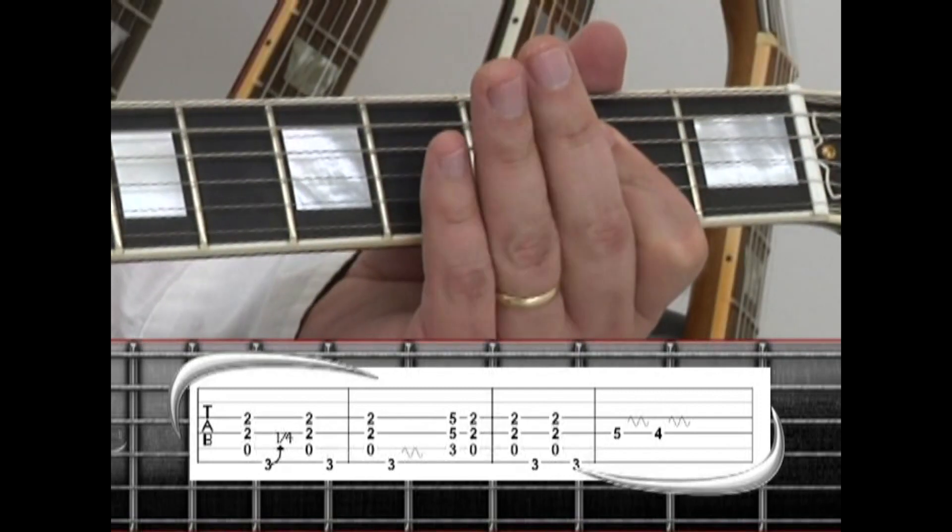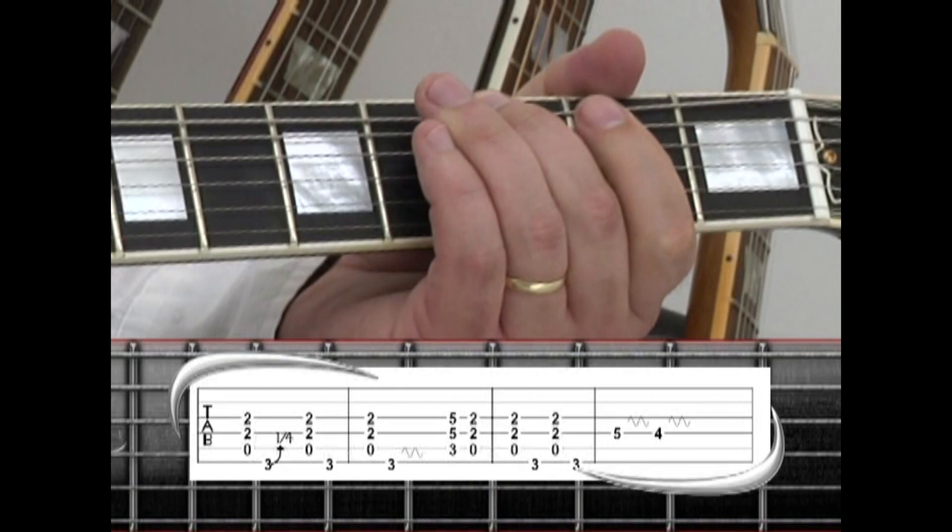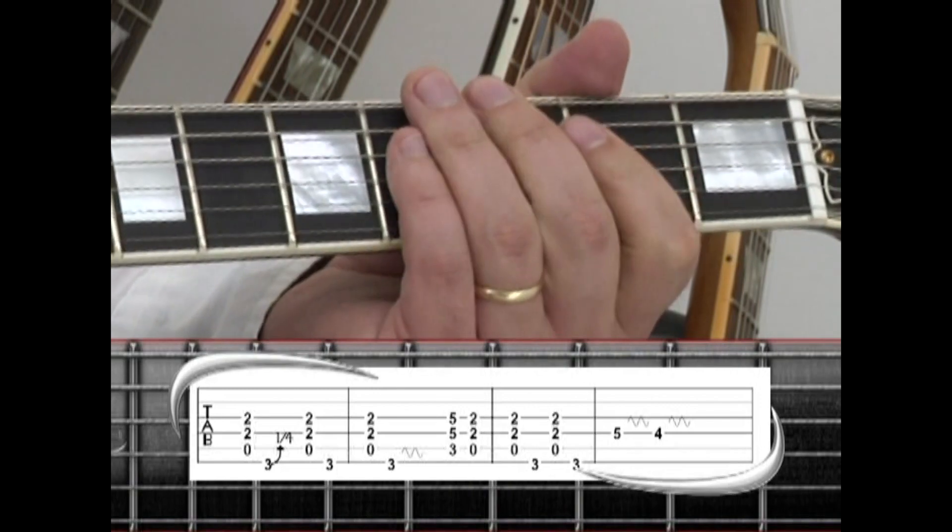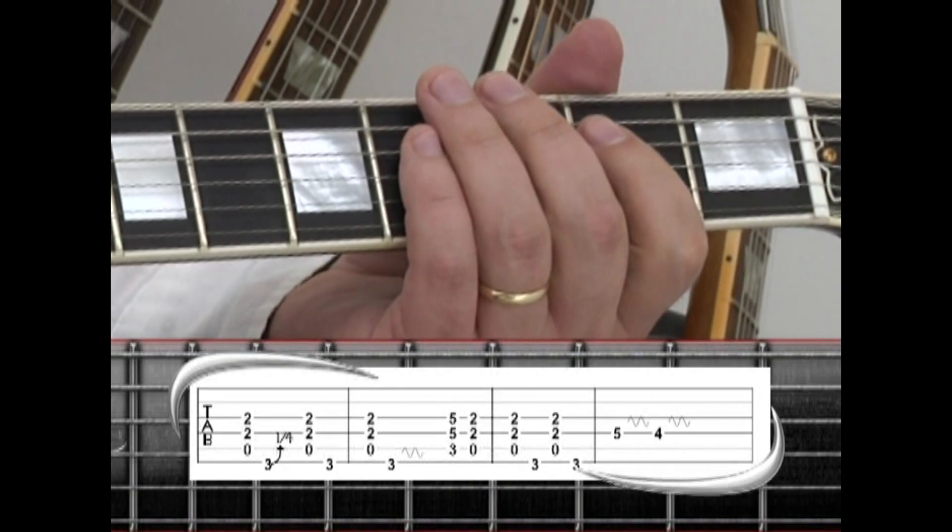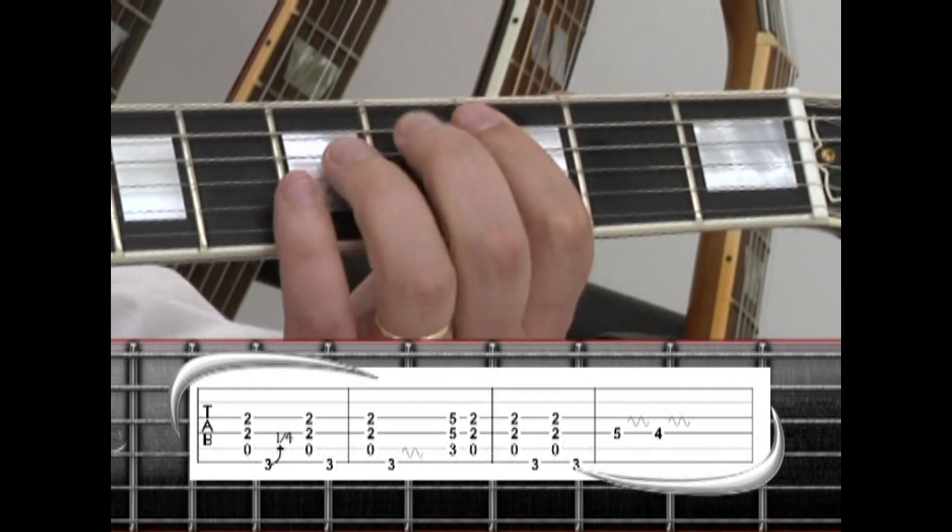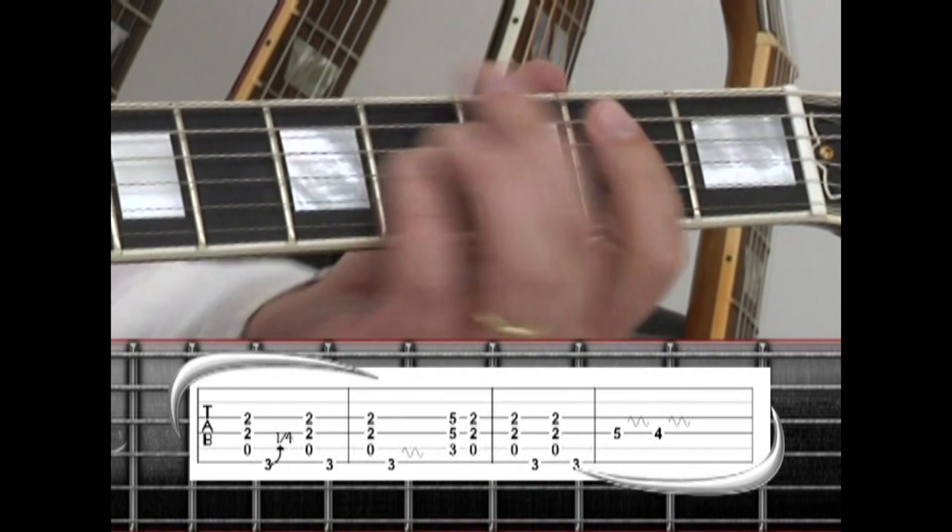A5 to G with a slight bend. A5 to G mute. A5 to G with vibrato. C5, A5, mute.